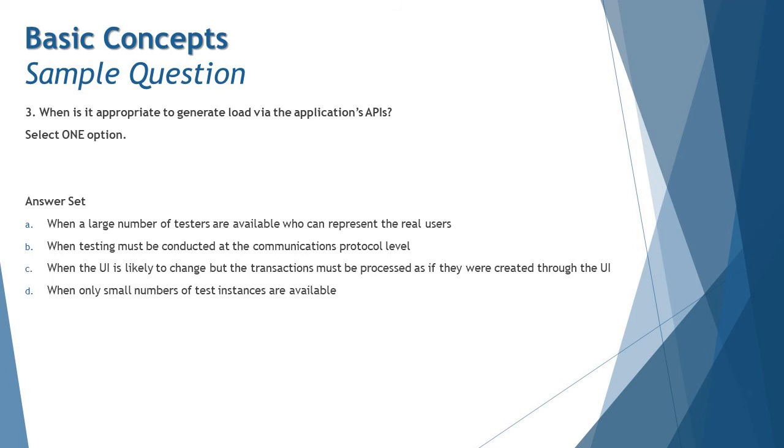to be into considerations to apply or generate the loads. Let's look at Option C: when the UI is likely to change but the transactions must be processed as if they were created through the UI. That's the most appropriate thing where API comes into picture because UI is unstable. Even if you're talking about your crowd, simulation, or protocol-based script generation, if UI is unstable you cannot go with that. But the transactions are being processed just like UI - that's where API comes into picture. So C is correct because testing through the API makes the most sense when the UI is unstable and definitely